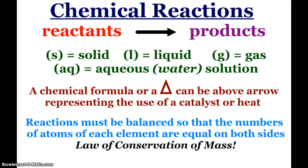It is important for us to write those sometimes, not all the times. If a chemical formula or a triangle is above an arrow, that means a catalyst was used, or that heat was added to this reaction.